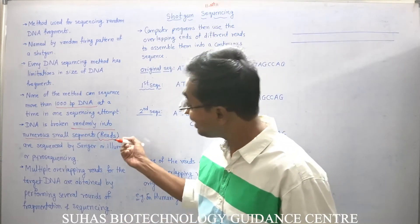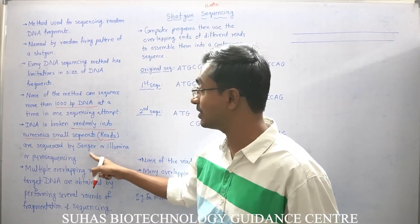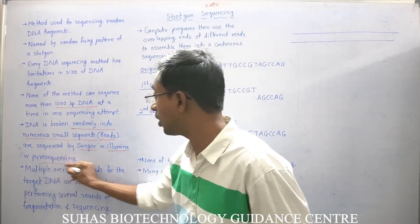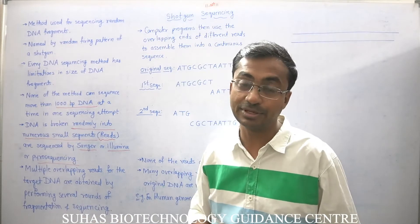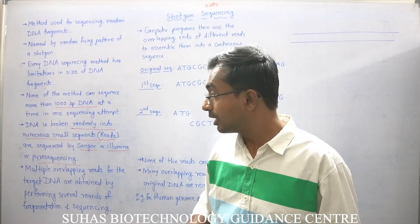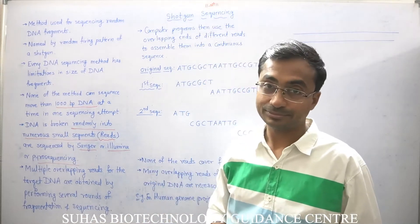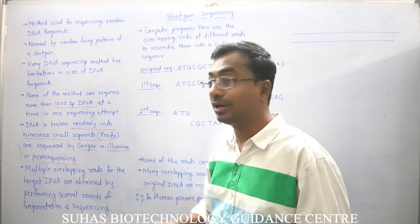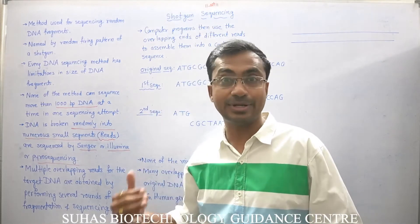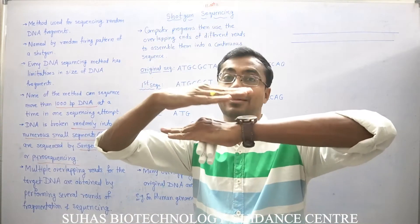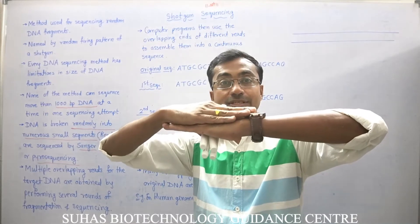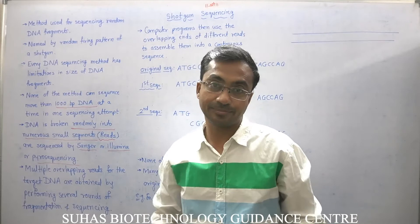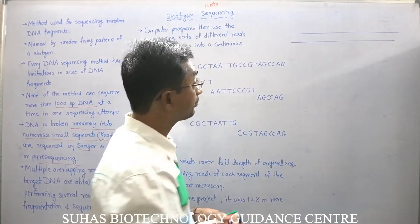So what we are going to do is break the DNA randomly into numerous small segments. These small segments are called reads, and each read is sequenced by Sanger, Illumina, pyrosequencing, or many other DNA sequencing methods. After that, since we have broken the DNA into various fragments randomly, the overlapping regions are used to move forward in assembling the complete sequence.